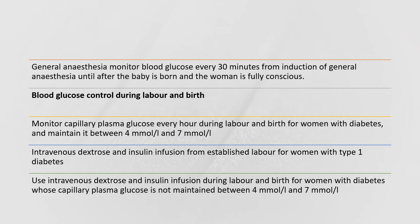If general anaesthesia is used, monitor blood glucose every 30 minutes from induction until after the baby is born and the woman is fully conscious. Blood glucose monitoring during labour and birth: monitor capillary blood glucose every hour and maintain it between 4 and 7 mmol/L. Intravenous dextrose and insulin infusion should be used when a woman with type 1 diabetes is in established labour, and for any woman with diabetes whose capillary blood glucose cannot be maintained between 4 and 7 mmol/L.